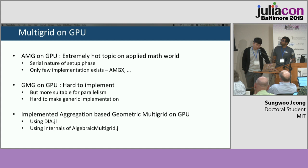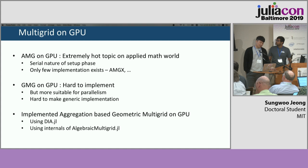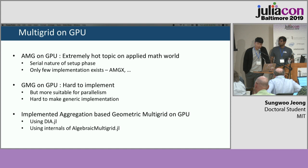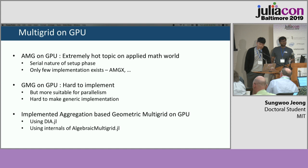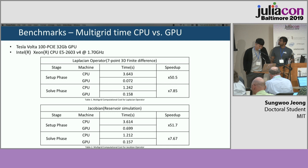One notable AMG GPU implementation is AMGX from NVIDIA, which is pretty nice and also open source. On the other side, GMG on GPU is more suitable for parallelism, but it's kind of problem-specific, which makes it hard to make a generic implementation. So me and Ranjan decided to approach this with a hybrid type of multigrid using aggregation — an aggregation-based geometric multigrid — implemented on GPU using our DIA.jl and AlgebraicMultigrid.jl.